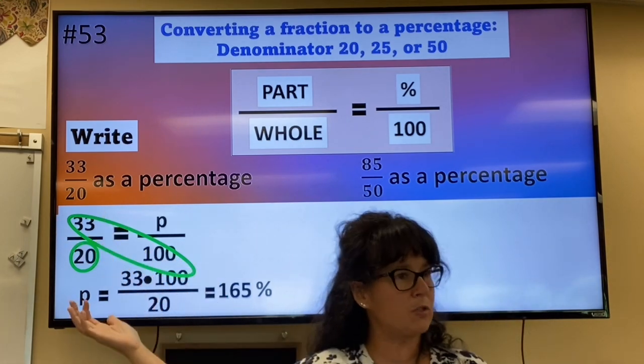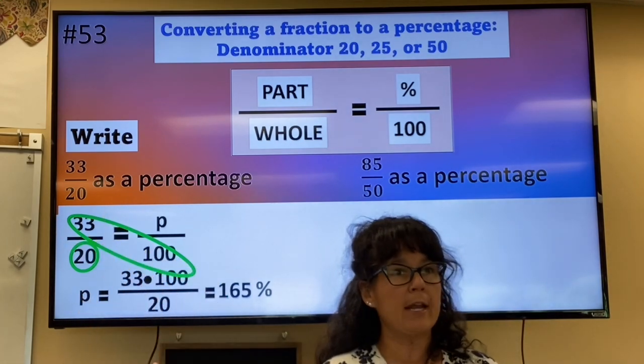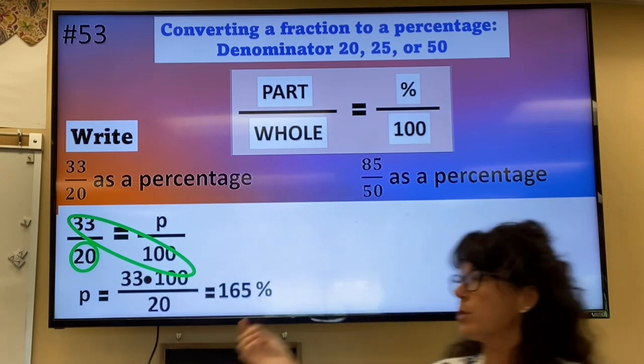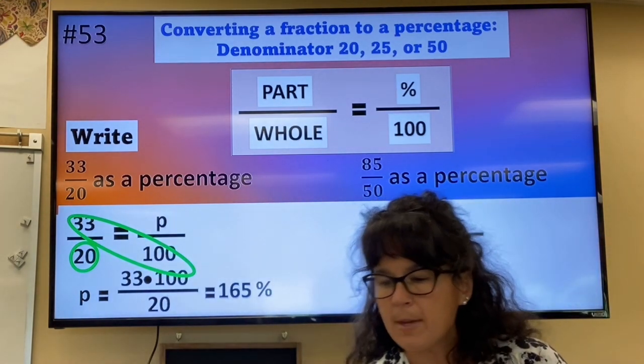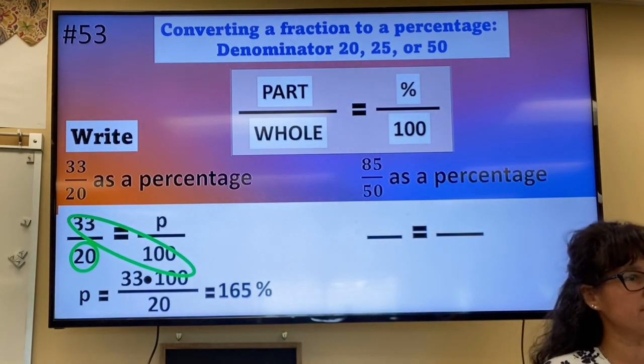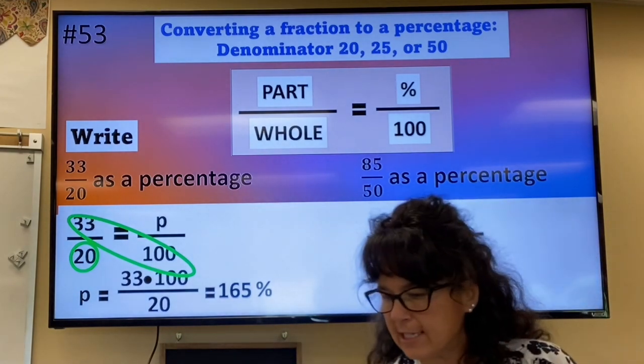Because again, if you had 33 out of 20, you got more than 100%. So this is just one more example of the same thing. I would immediately make a fraction equal to a fraction. The fraction is given.